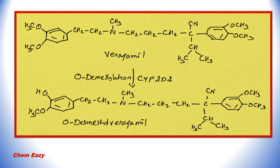Verapamil is also metabolized by cytochrome P450 2D6 via O-demethylation into inactive metabolites. Here you can see the structure of verapamil undergoing O-demethylation by CYP2D6 — the O-CH3 group undergoes O-demethylation and becomes OH, giving O-demethyl verapamil.